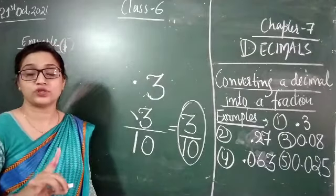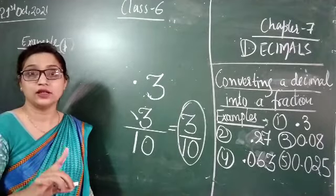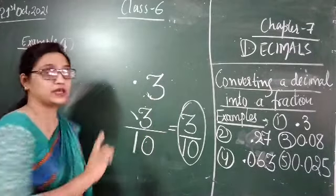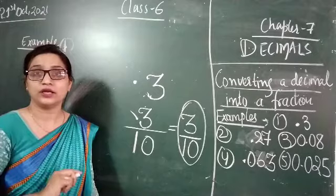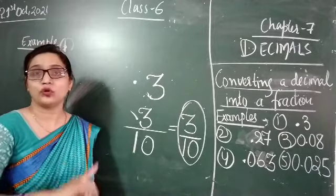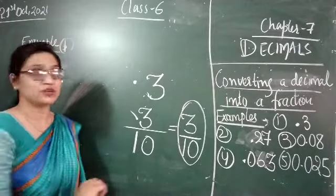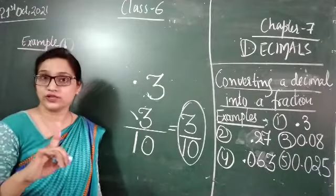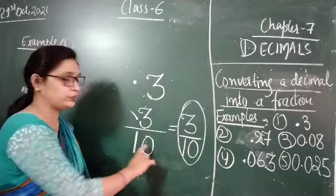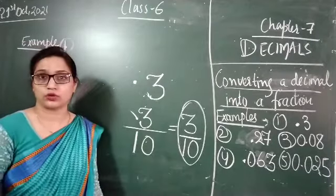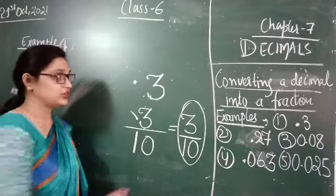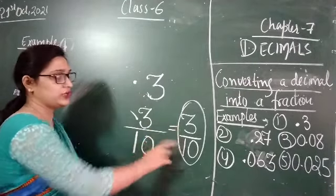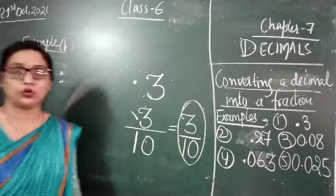We have to remember how to convert: first, observe the digit at its place value. There is only one decimal place, so in the denominator write 1 followed by one zero — that depends on the place value. If there is one decimal digit, you put one zero. So the fraction of 0.3 is 3 upon 10.